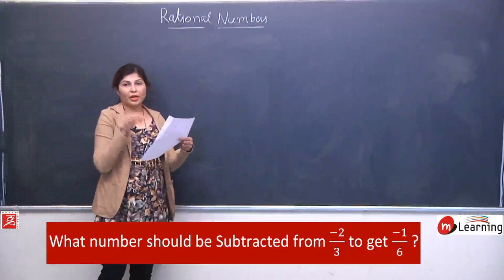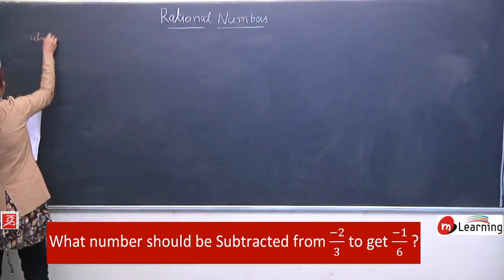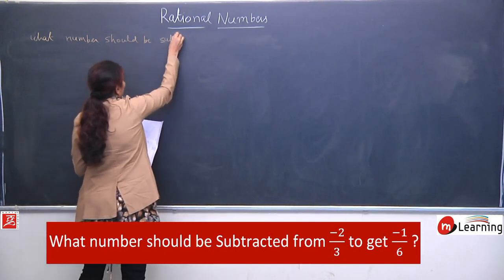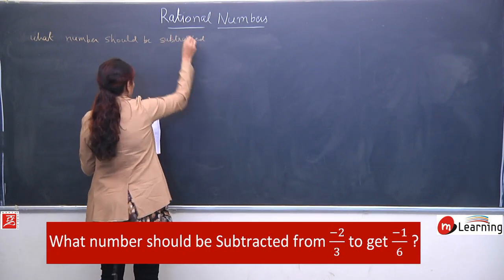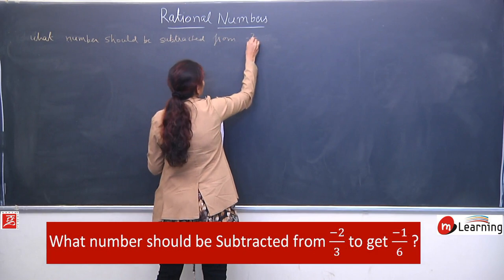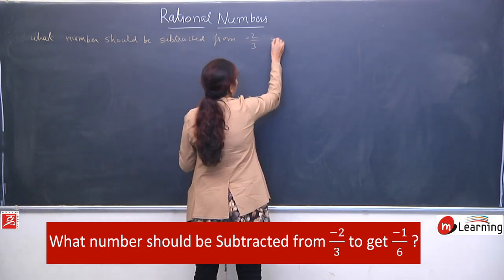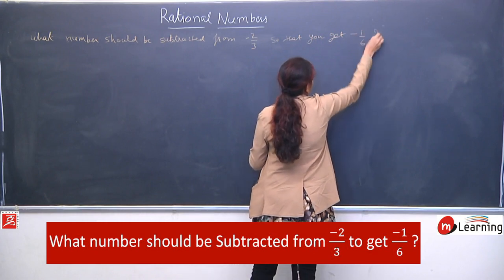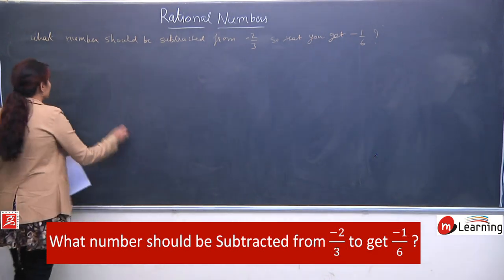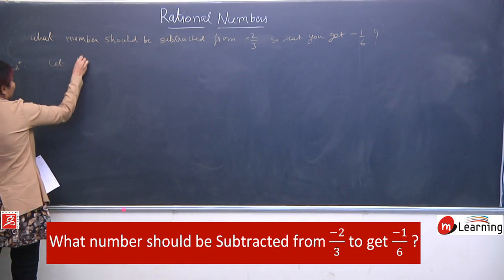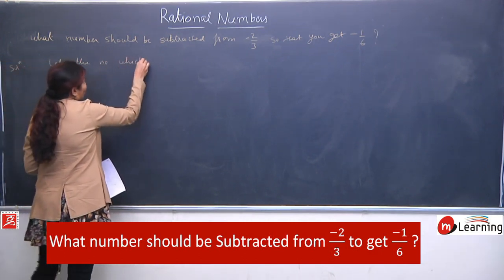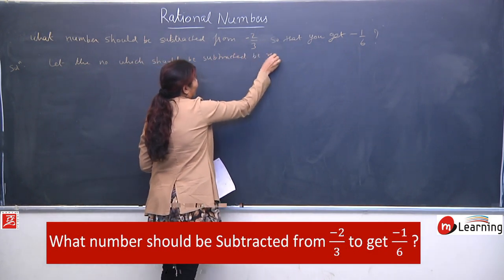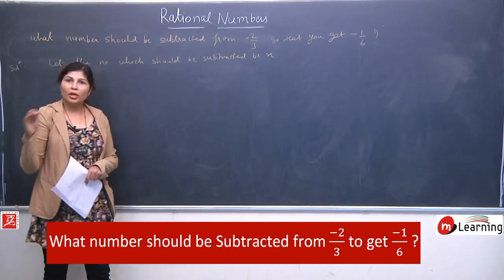Another one is: what number should be subtracted? Yahan par pattern thoda sa change hai. What number should be subtracted from minus 2 by 3, so that you get minus 1 by 6? Now again we will assume the variable x. Same tarike se hum wahi likhenge — let the number which should be subtracted be x.